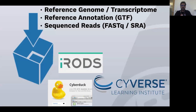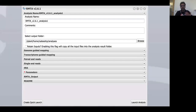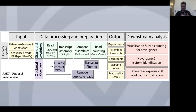The next step, once you have your data in the data store, is to use the RMTA app integrated into the discovery environment. This is how we provide a graphical user interface for launching RMTA jobs. RMTA requires minimally a reference genome or annotation and sequence reads, either in FASTQ form or SRA IDs. If you are using SRA IDs, the tool will download the sequence reads and convert them to FASTQ files.